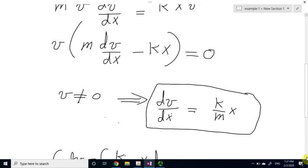So anyway, we are left now with this equation, saying that dv by dx equals k over mass times x. And now we have this simple differential equation which can be solved.